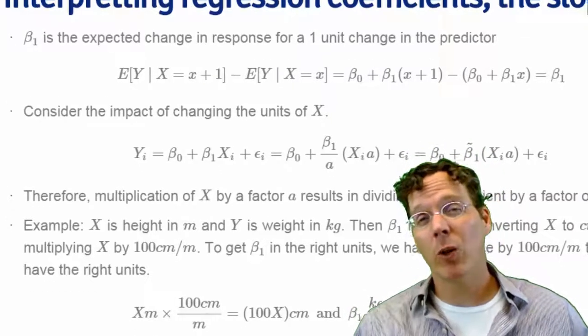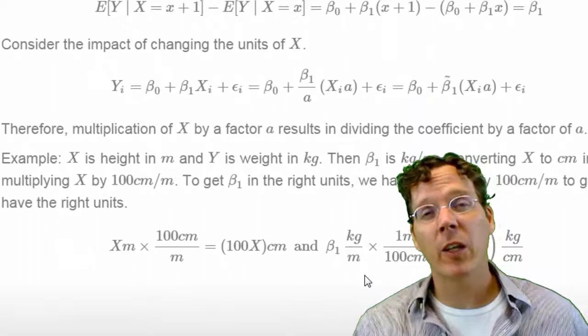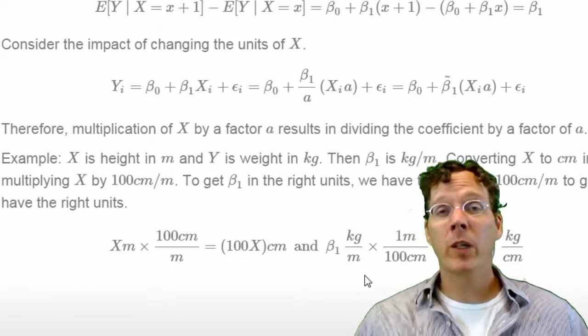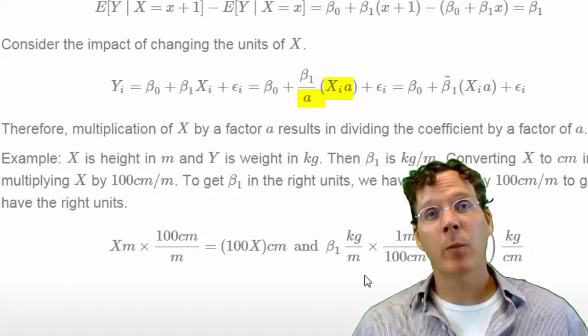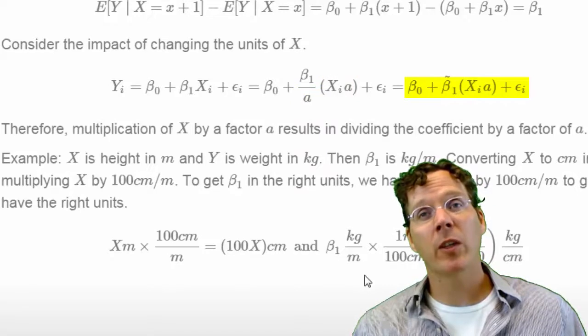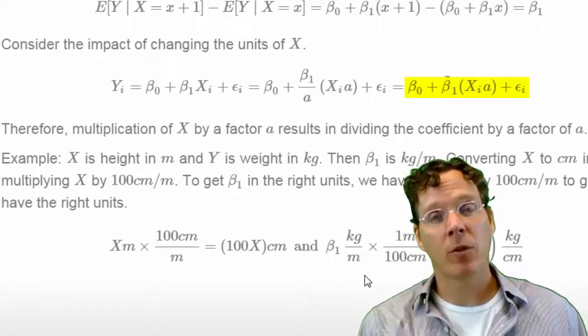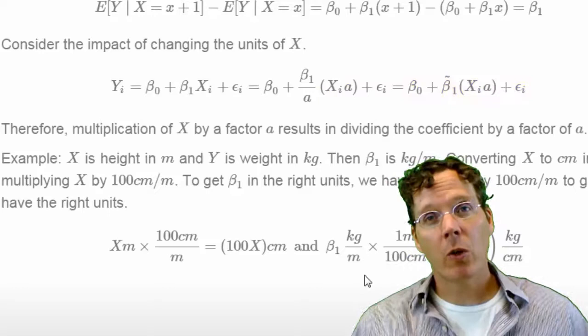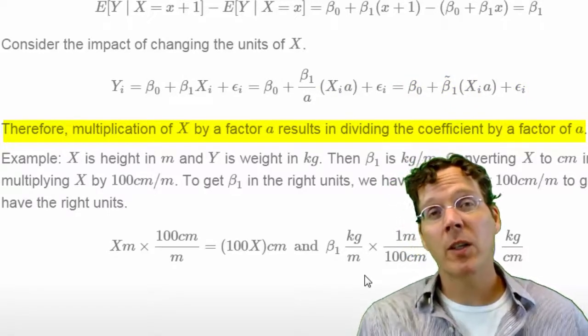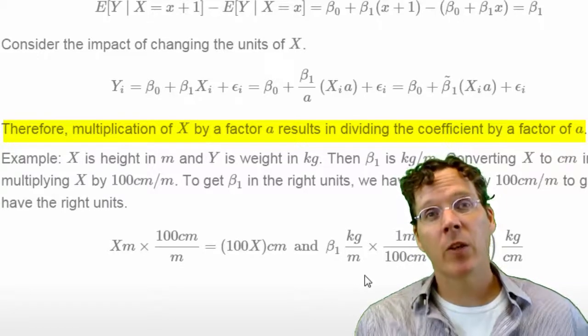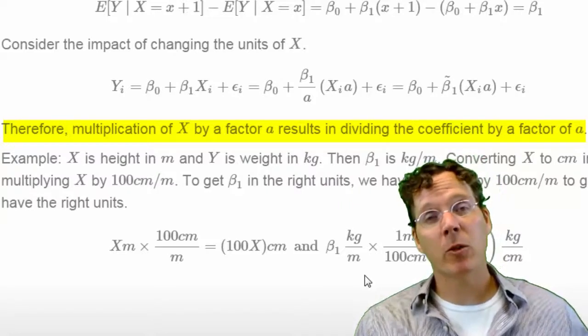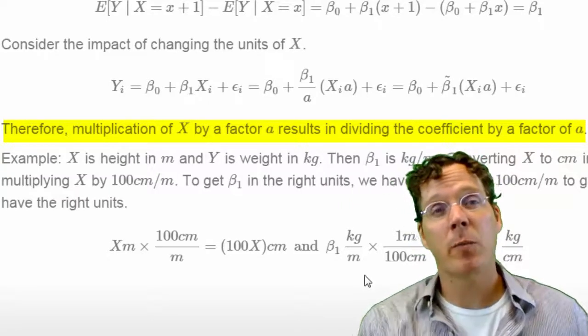What if we scale the regression variable? And usually we are scaling by a number, say a, that's positive. So what we can do is simply multiply and divide by a, and we can rewrite our regression equation as beta naught plus beta one tilde times X times a plus epsilon. So we've multiplied X by a, and our regression slope has now been divided by a. So in other words, multiplication of a regression variable by a factor of a results in dividing the coefficient by a factor of a.